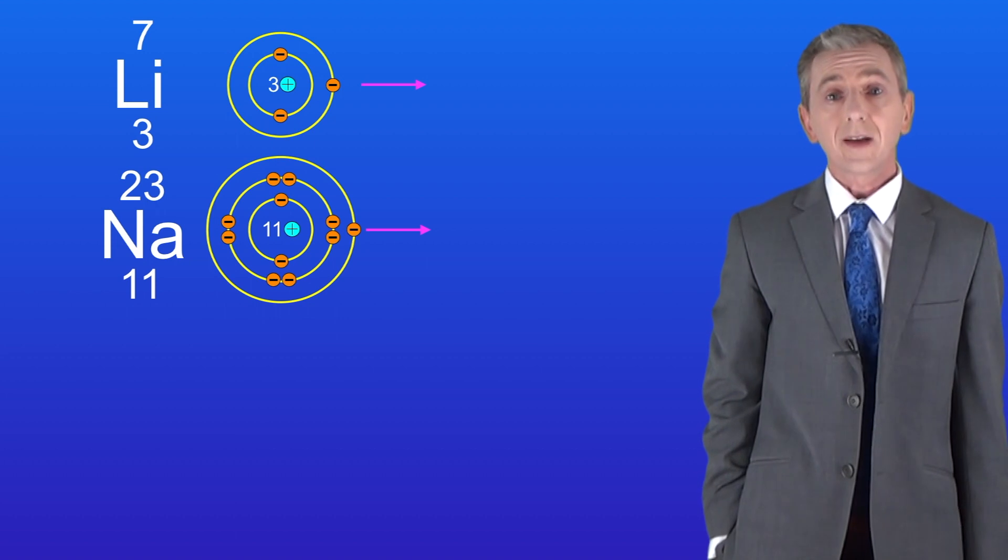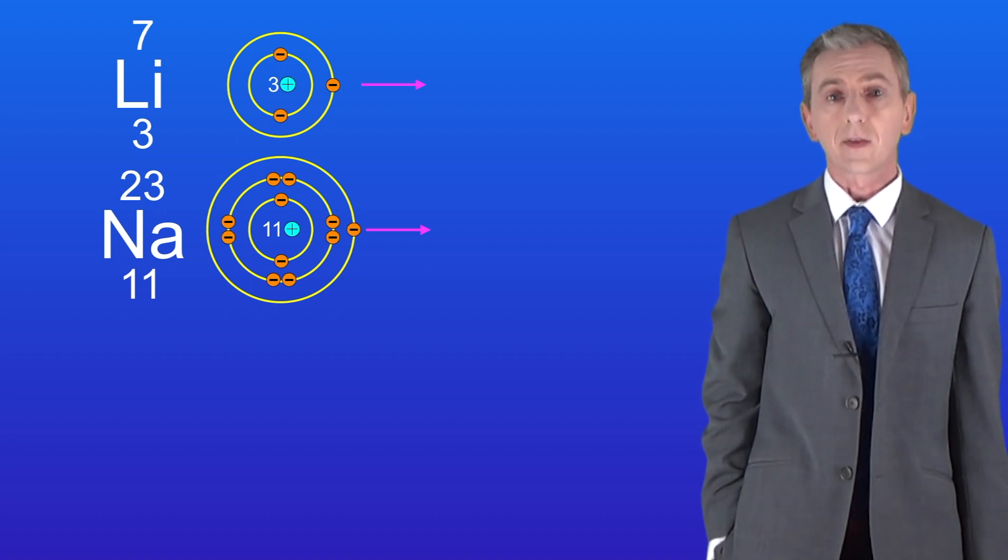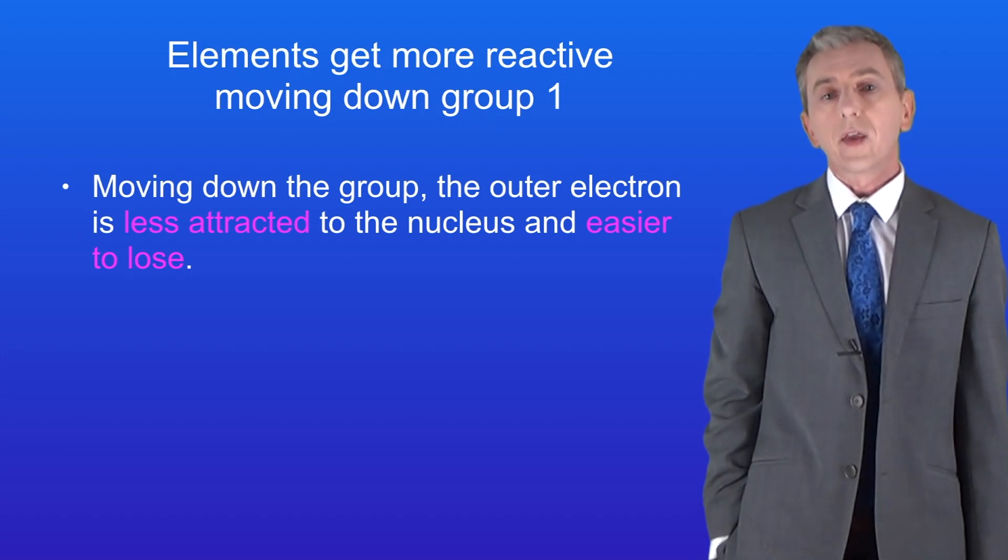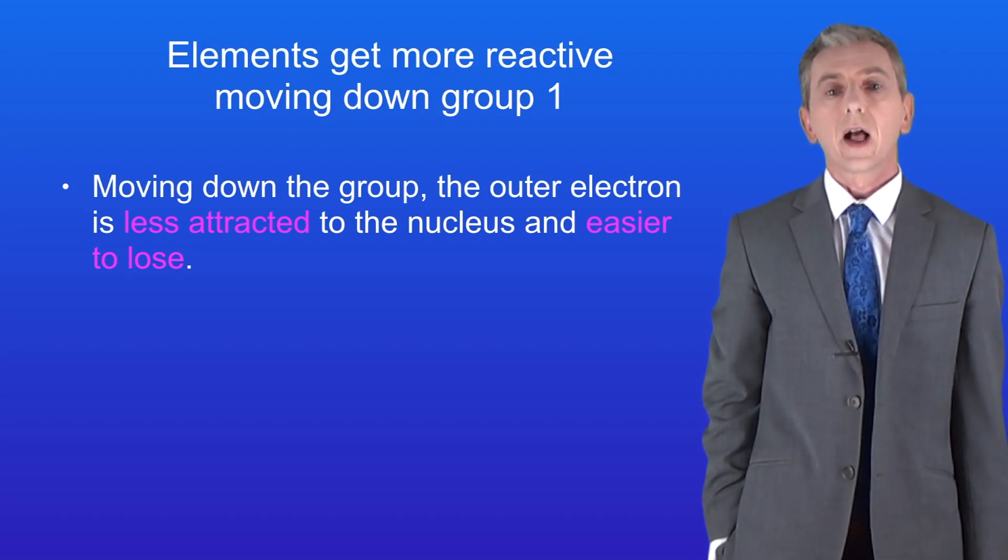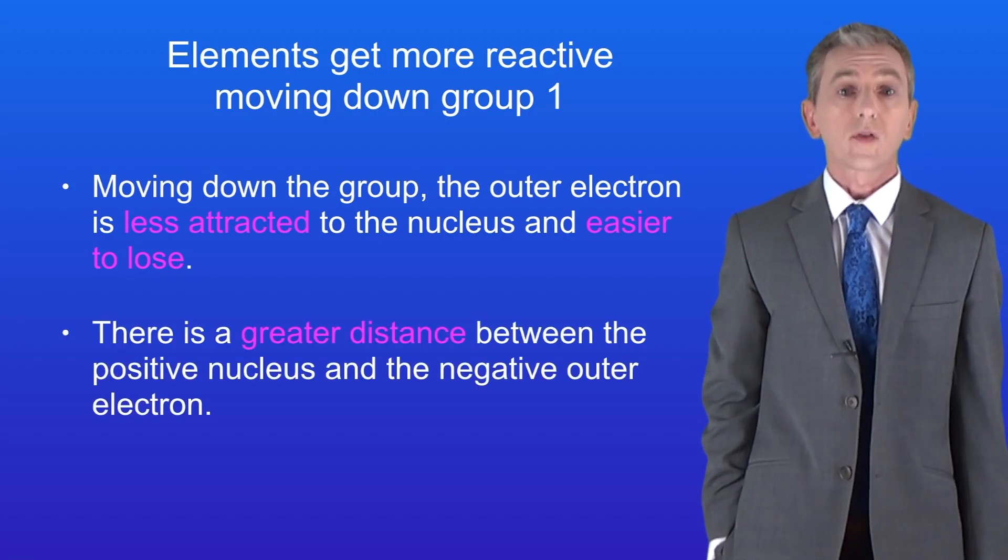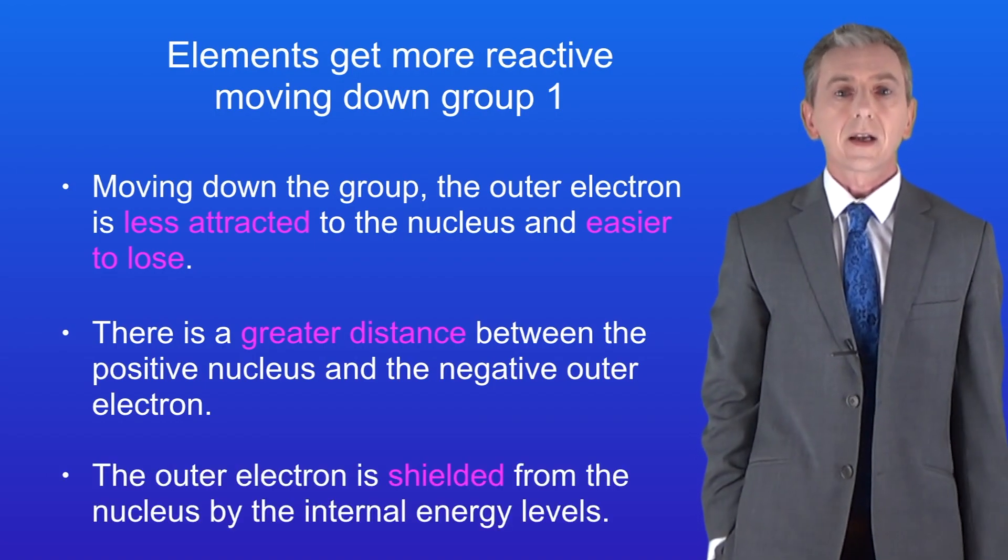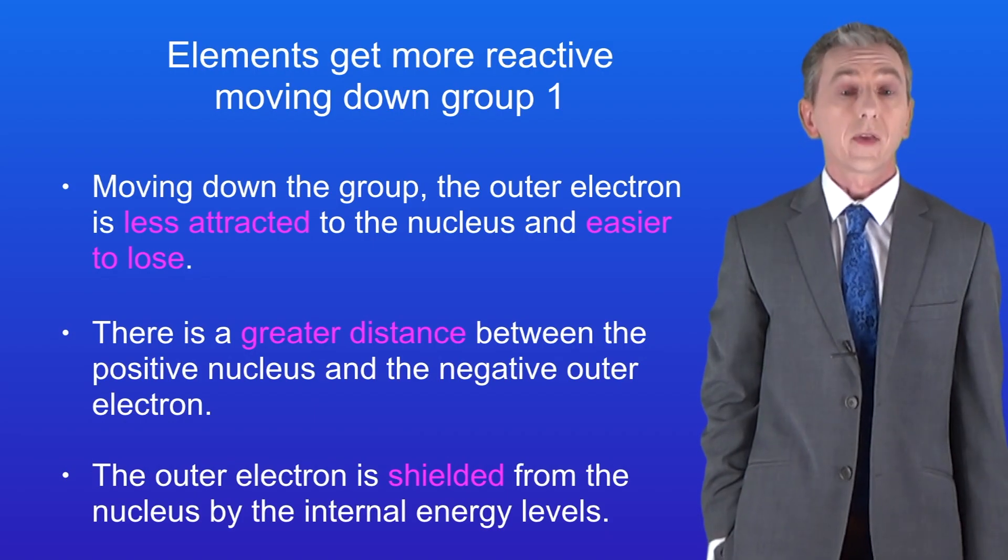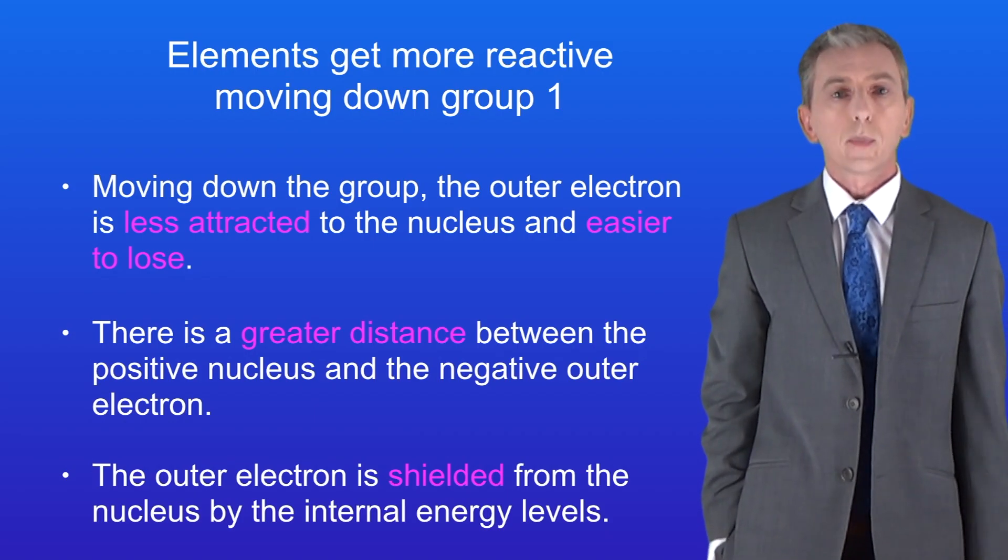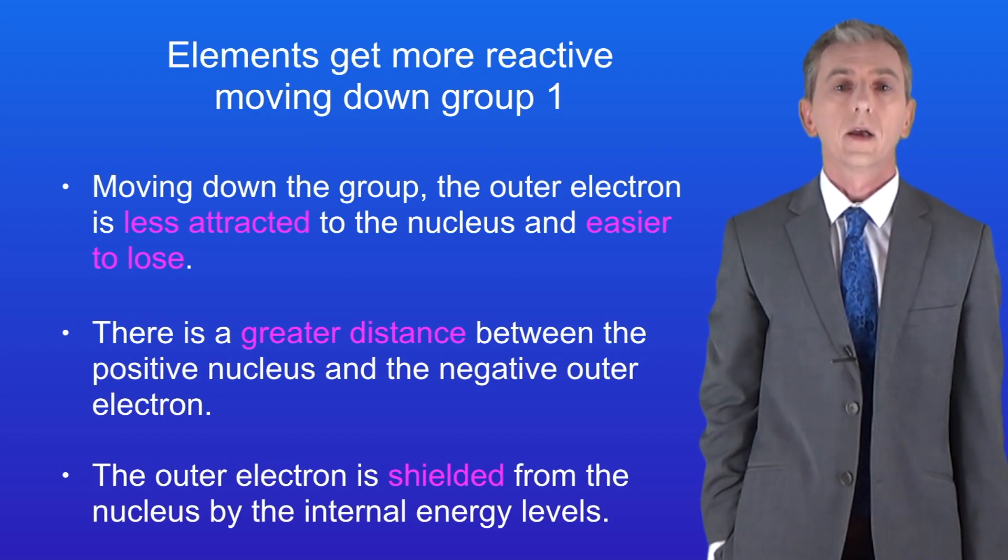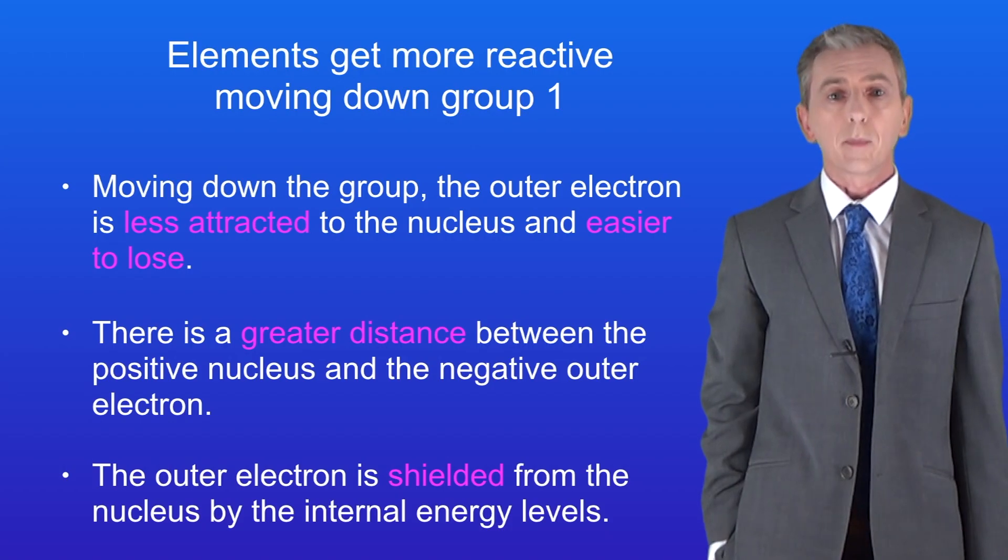When sodium reacts, it loses its outer electron even more easily than lithium. As we move down the group, the outer electron is less attracted to the nucleus and it's easier to lose. That's because there's a greater distance between the positive nucleus and the negative outer electron. Secondly, the outer electron is shielded from the nucleus by the internal energy levels. Both of these factors mean that the outer electron is less attracted to the nucleus as we move down group 1, and therefore it's easier to lose that electron. So as we move down group 1, the elements get more reactive.